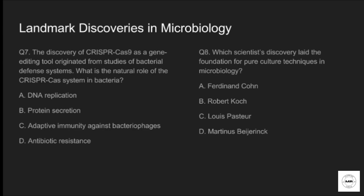Question seven: the discovery of CRISPR-Cas9 as a gene editing tool originated from the studies of bacterial defense systems. What is the natural role of the CRISPR-Cas system in bacteria? Option A: DNA replication. Option B: protein secretion. Option C: adaptive immunity against bacteriophages. Option D: antibiotic resistance. The correct answer is option C — adaptive immunity against bacteriophages.